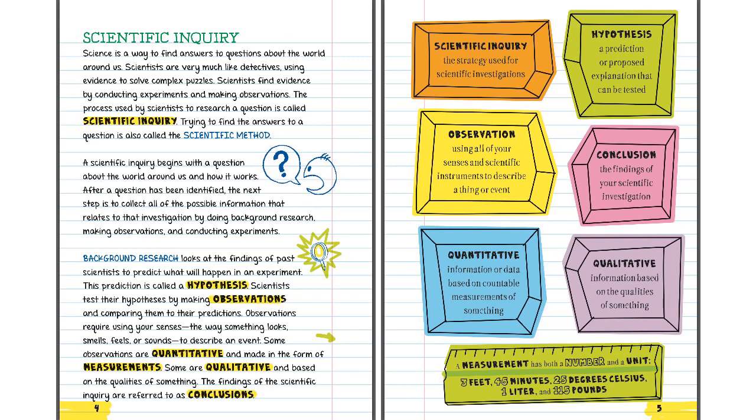Scientific inquiry: The strategy used for scientific investigations. Hypothesis: A prediction or proposed explanation that can be tested. Observation: Using all of your senses and scientific instruments to describe a thing or event. Conclusion: The findings of your scientific investigation. Quantitative: Information or data based on countable measurements of something. Qualitative: Information based on the qualities of something.